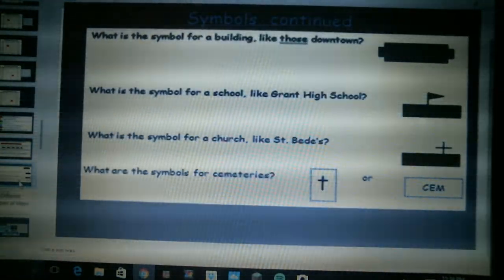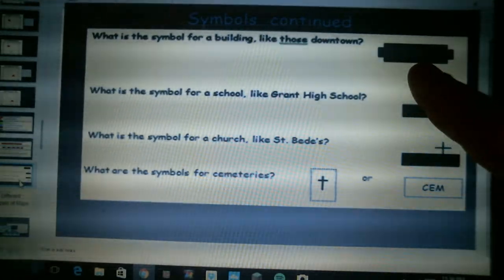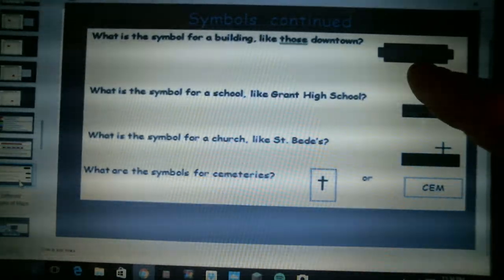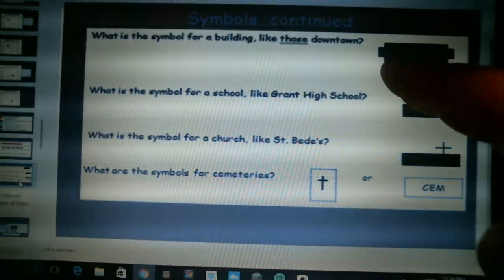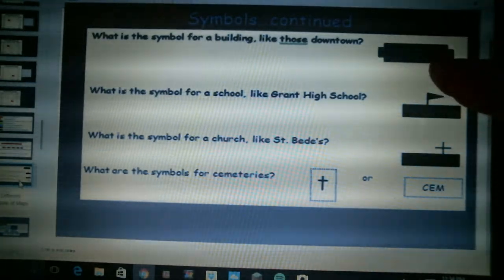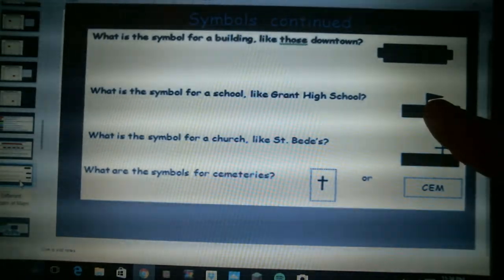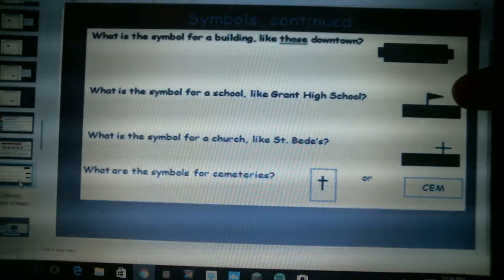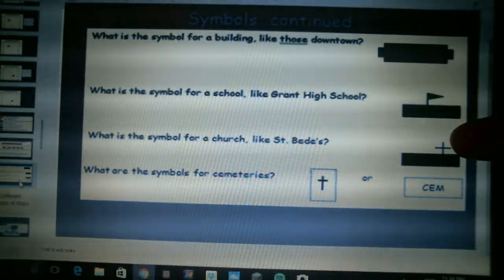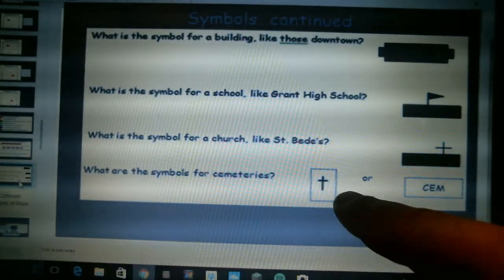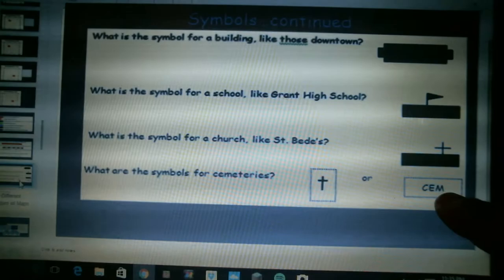Other symbols on a topographical map will include black squares for buildings downtown, they won't always have this shape here with six sides but the general black squares, rectangles will be buildings. Schools will have a triangular pennant flag on top. Churches will be rectangles with a cross on top, and cemeteries will be boxes with either a cross or a CEM in it.